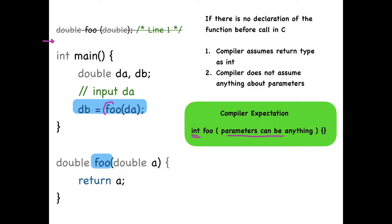So while calling this foo function, since there is no declaration, the compiler assumes the return type as int but finds double. So it's a type mismatch. Hence the error in this line.